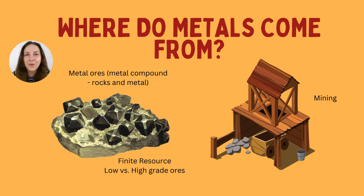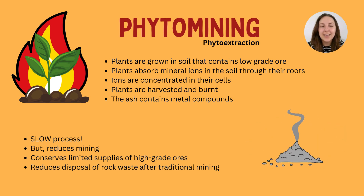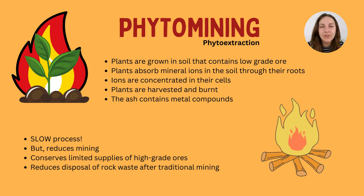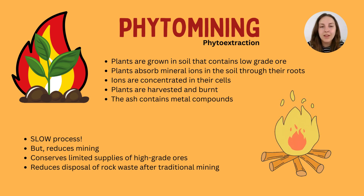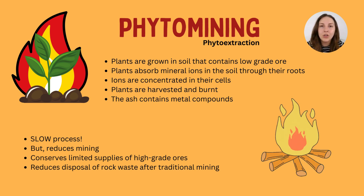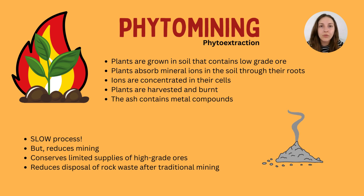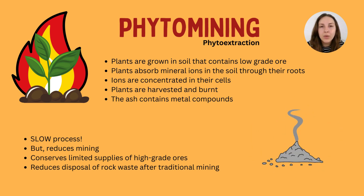The first process we're going to talk about is called phytomining — it can also be called phyto-extraction. Both terms refer to the same thing. If we look at the etymology, the prefix 'phyto' simply means plants, and mining and extraction are self-explanatory. So we are using plants in this process to gain those low grade metal ores from the soil and extract the metals from them.